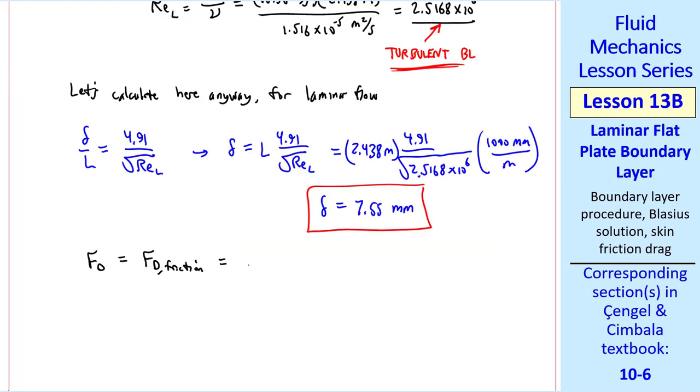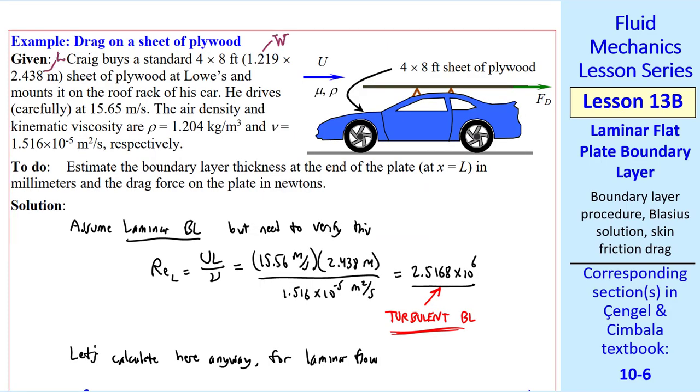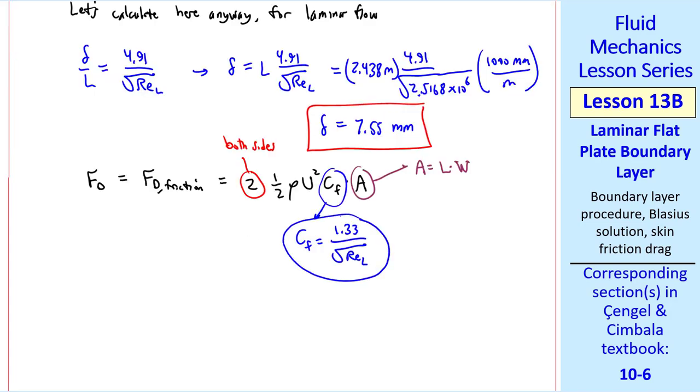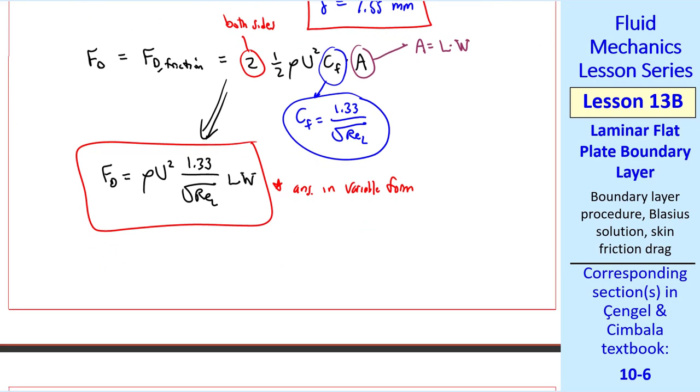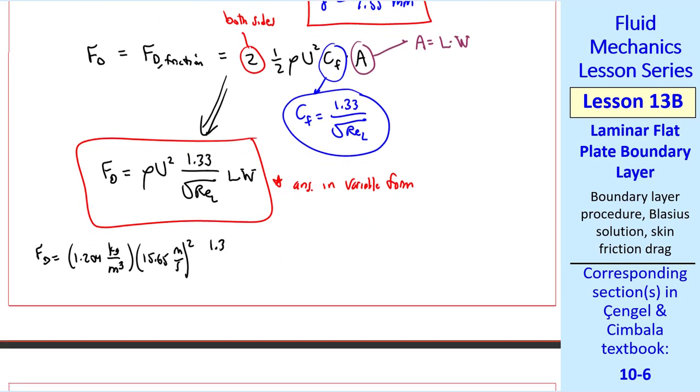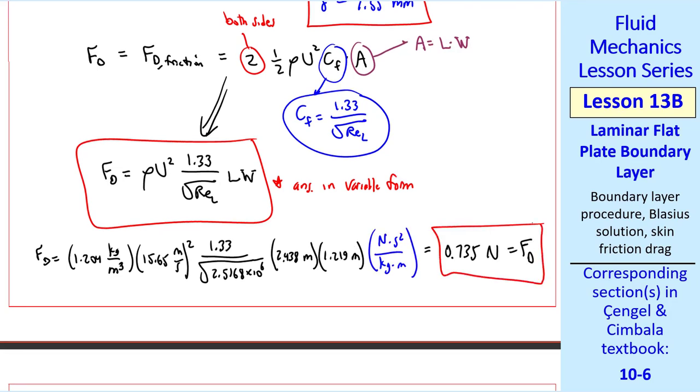FD, which is FD friction, is given by our equation above, where in this case the plate is exposed to the flow on both sides. And A is L times W, where W is the width into the page, and L is the length in the flow direction. And this is our capital U. We know that CF is 1.33 over the square root of REL. Putting all this together, this is our answer in variable form. Now we plug in the numbers: rho, U squared, and our term with Reynolds number, L, W, and a unity conversion factor. And I get FD to three significant digits.